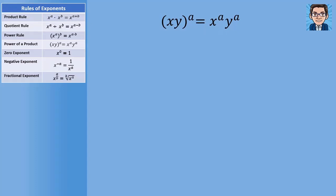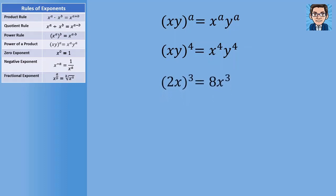The next property: when we have two things inside a parenthesis raised to a power, we've got to raise both to that power. So if we've got something like (xy) to the fourth, both the x and the y have to be taken to the fourth power. Where some people make mistakes is when you've got (2x) all to the third power — the two needs to be raised to the third power as well as the x. So this simplifies to 8x to the third.